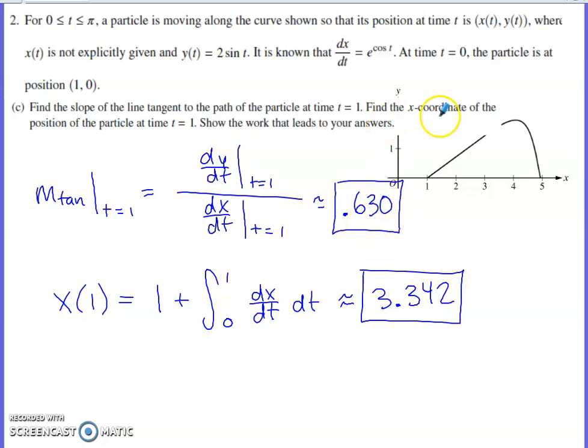It also asks us to find the x-coordinate of the position of the particle at time 1. They tell us the x-coordinate at time 0 is 1. So x of 1 is going to be the x-coordinate at time 0, which is 1, plus how much the x-coordinate changes by integrating the rate of change of the x-coordinate of the particle from 0 to 1. That's an integral you can do on the calculator, and you should end up with a value here.